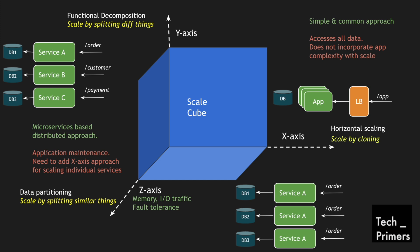Only the specific customers in that data set are affected compared to the rest — that's another advantage of data partitioning. It is also much more scalable compared to functional decomposition. While y-axis is better than x-axis, data partitioning is better than functional decomposition because you are granularly splitting individual functions into individual data sets. If your data is huge and you want to scale at a granular level, you can split data based on date, customer location, or similar criteria, giving you better memory usage, traffic management, and fault tolerance.